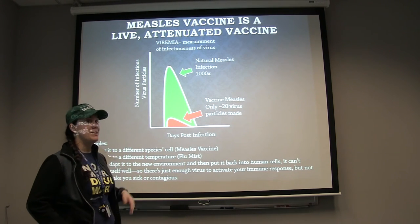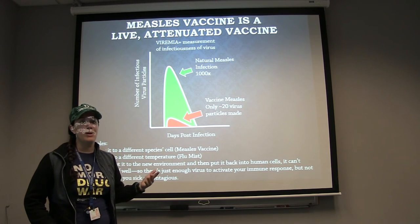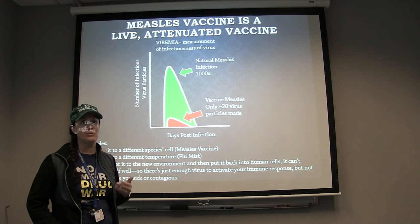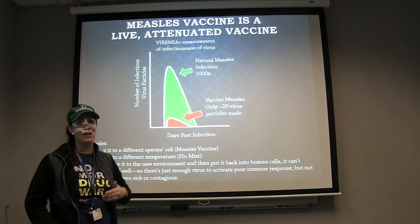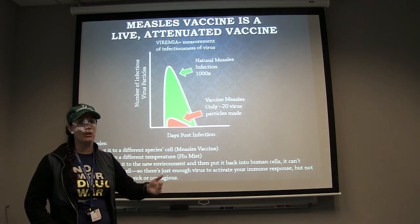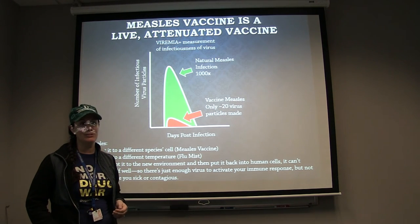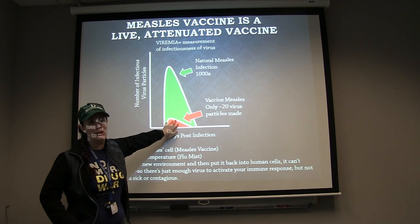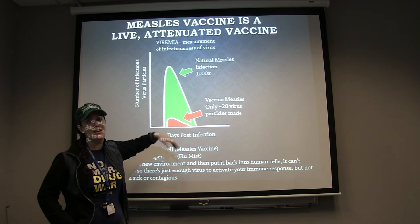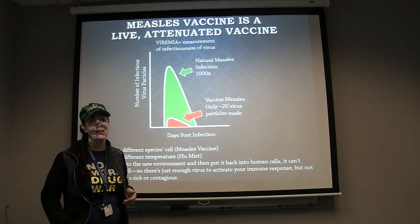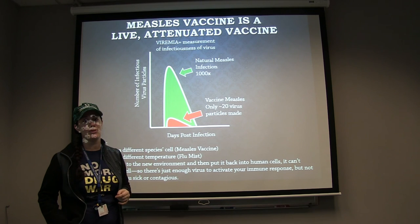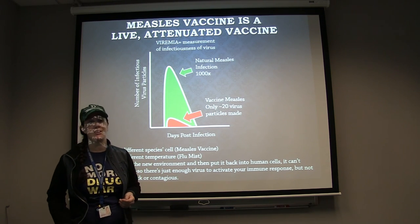Basically, attenuation is all about adapting the virus or other pathogen to a new environment. You do this over many, many different cycles, so that by the time you inject it into the human again, it's become very inefficient at replicating. This is not enough to make you sick, because your immune system can wipe it out super fast — before you feel sick and before you can pass it on.